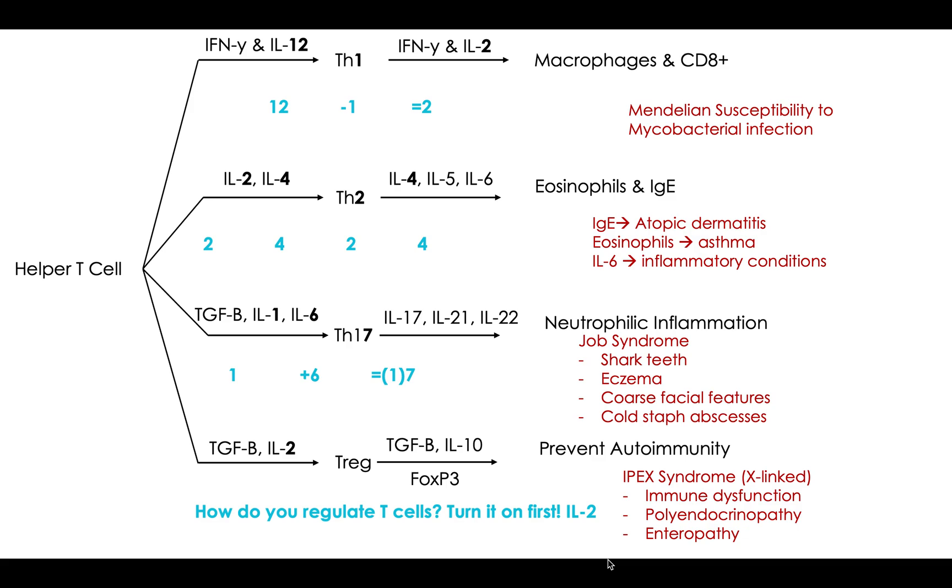So real quick recap, this is a little bit longer of a video, but I think this is a video and a concept that has helped me a lot. So 12, get rid of the 1, is 2 for IL-12, turning on Th1 to give off IL-2. 2, 4, 2, 4 for IL-2 and 4, turning on the Th2 to give off IL-4. And it'll give off IL-4, 5, and 6.